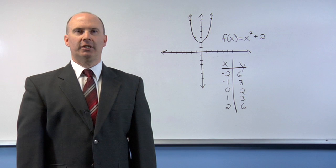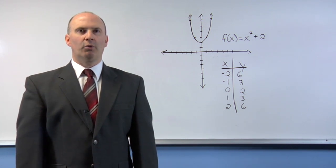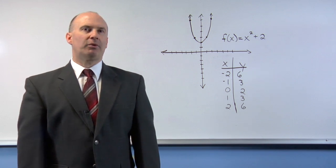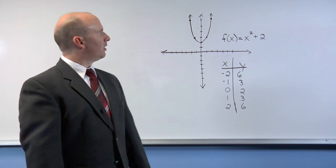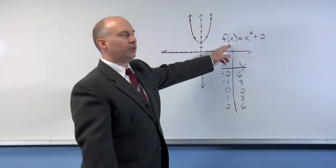Remember that a polynomial function is a collection of terms added or subtracted together with exponents that are all integers. For example, we're going to take a look at the function f of x equals x squared plus 2.